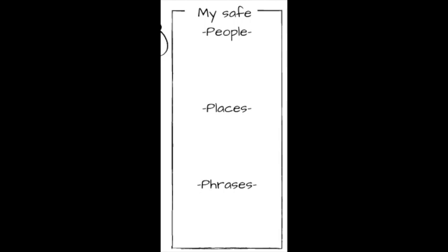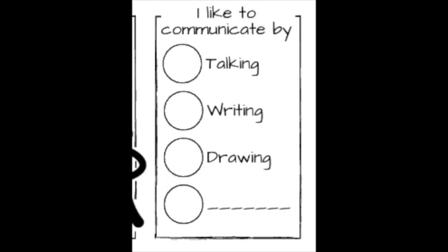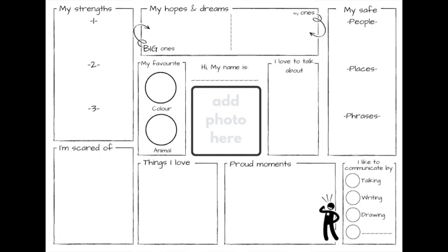And then finally, just a little note about communication preferences, because it's super easy to get this wrong and make assumptions about how a child will best work with us. Do they prefer to talk, or to write, or to draw, or something else? If so, fill it in. Having an understanding of a child's communication preferences, noted at a time of calm, can stop us getting it wrong at times of more challenge.